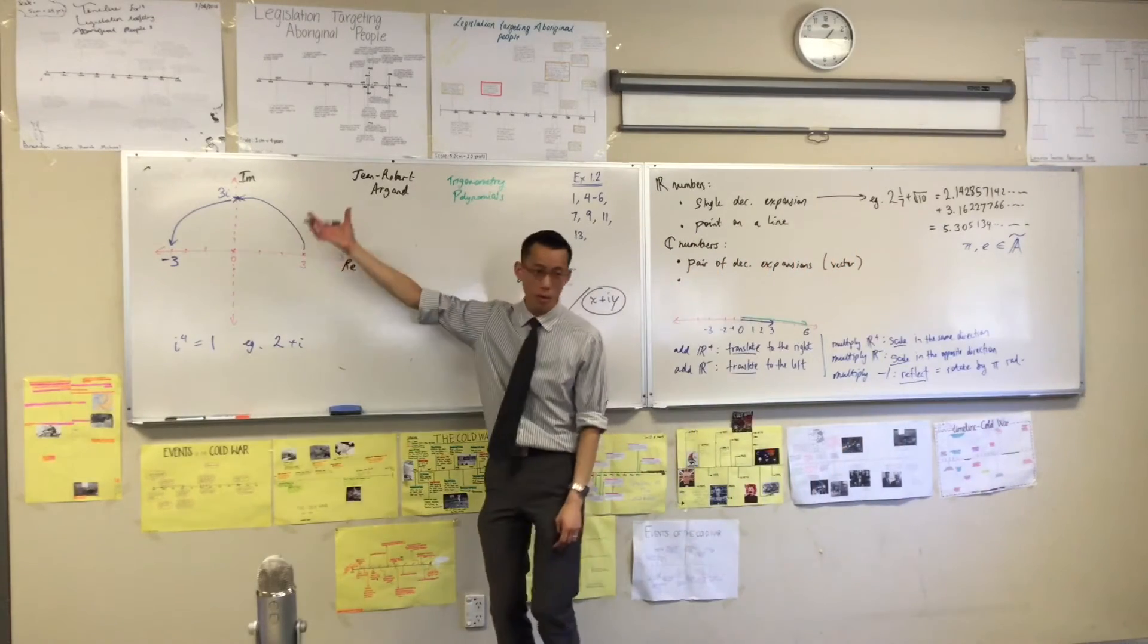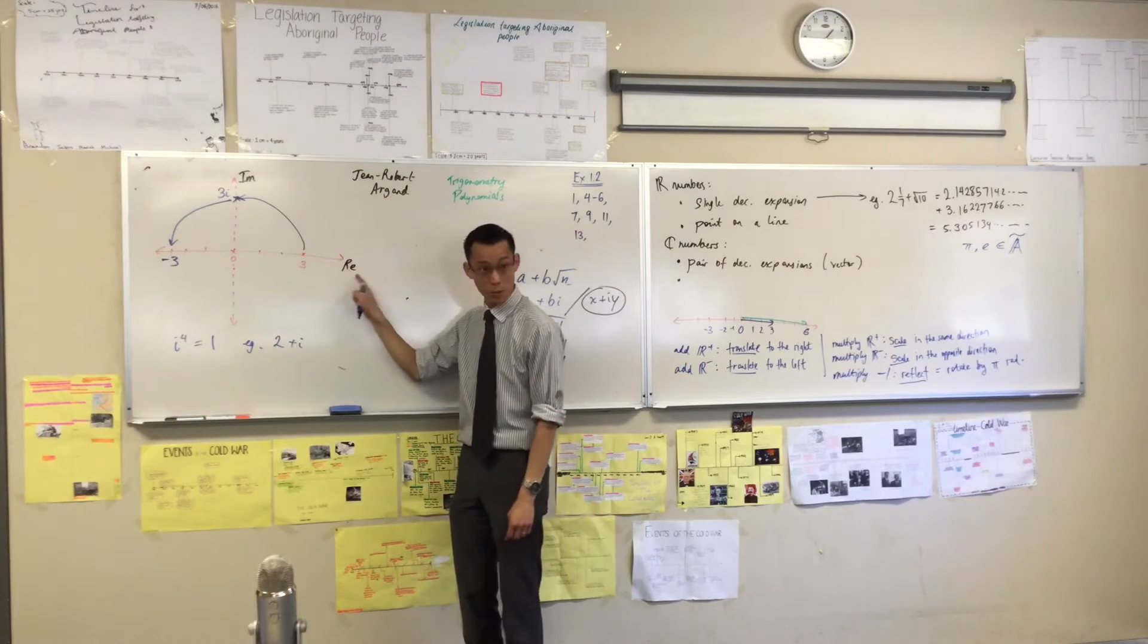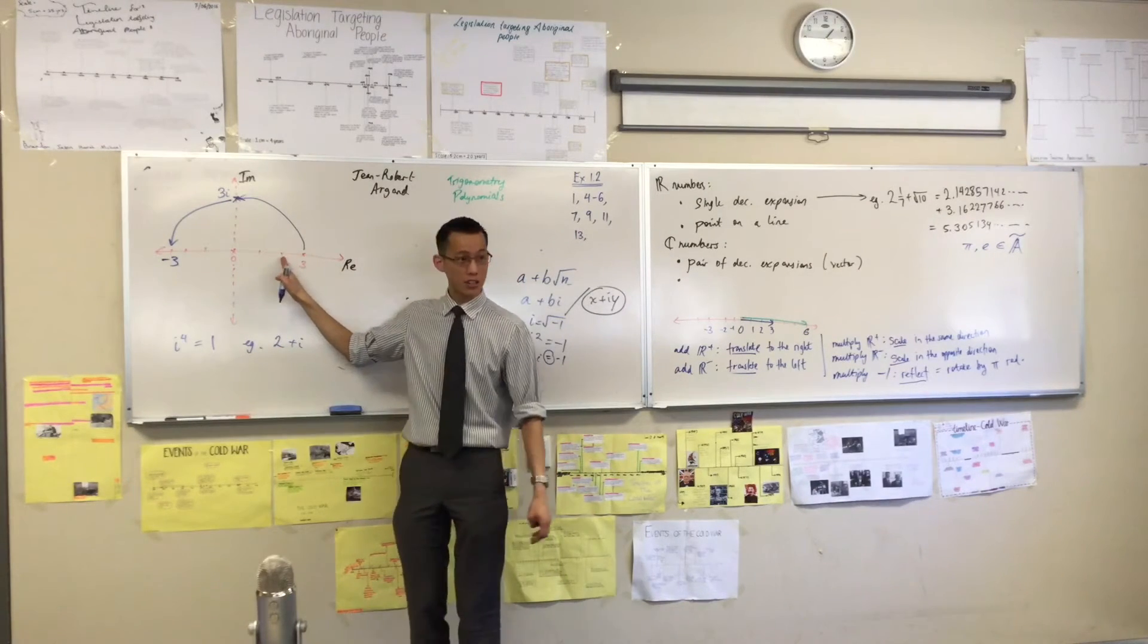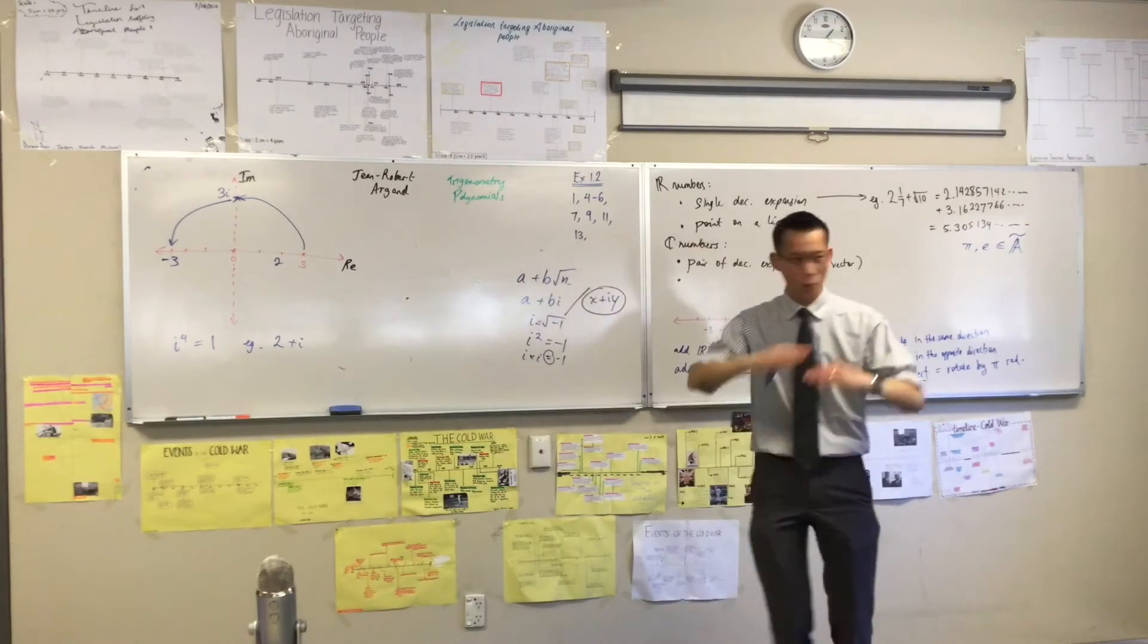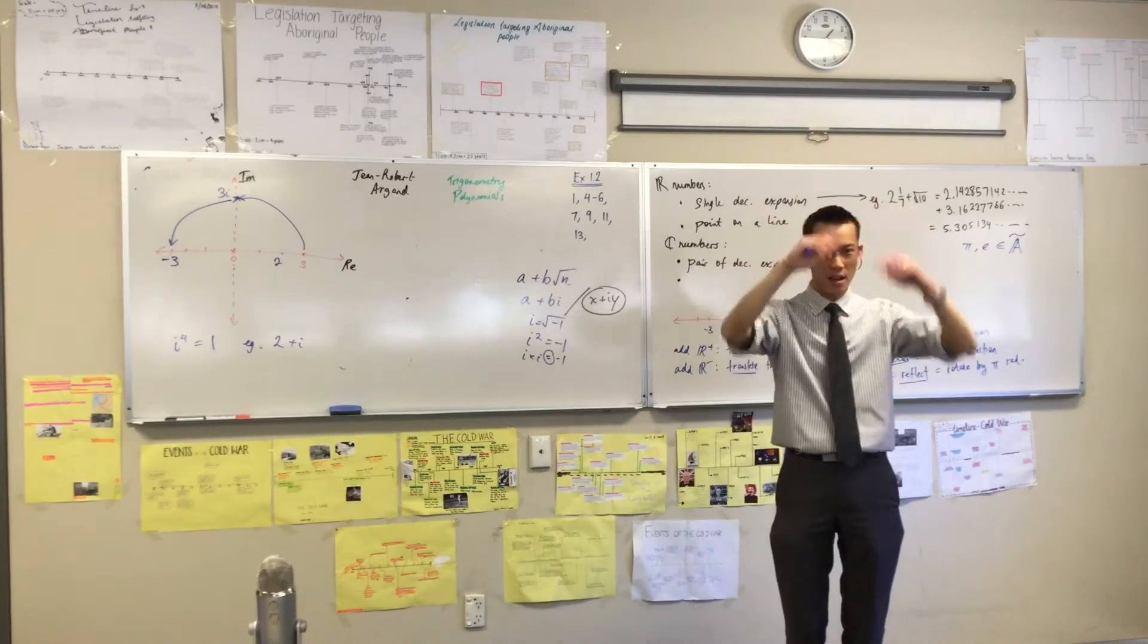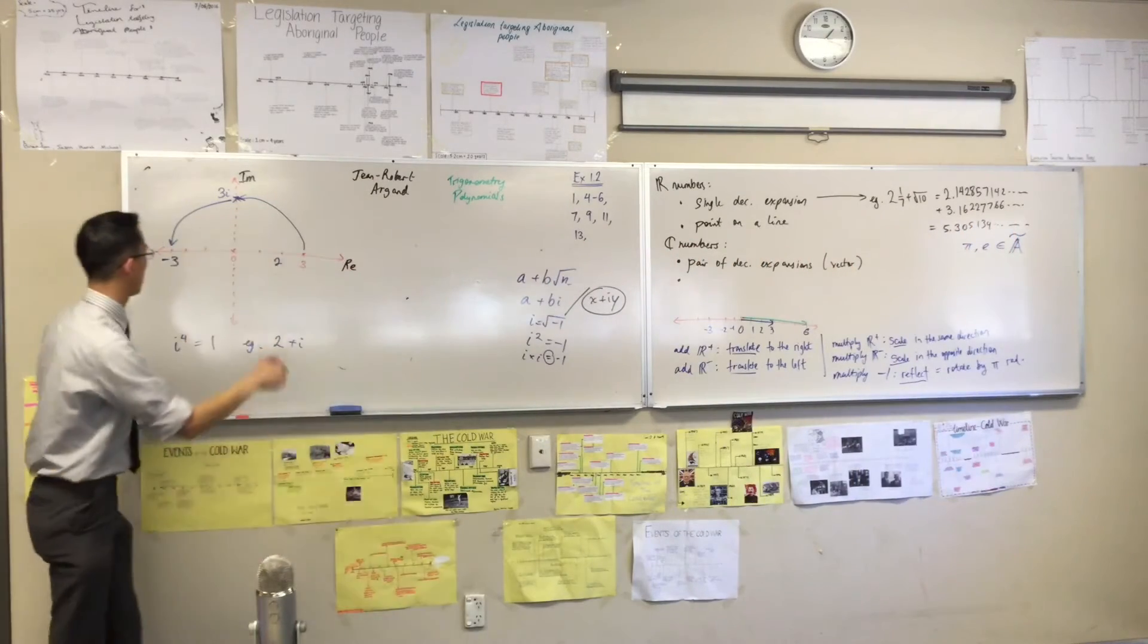Now, where is he going to go on this diagram? Well, the real part of it tells me I should go to 2. And the imaginary part tells me, okay, where am I on this axis? You told me that b is equal to 1, so I should go up one unit.